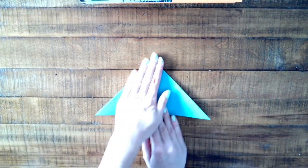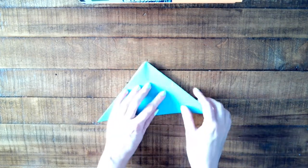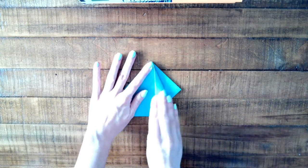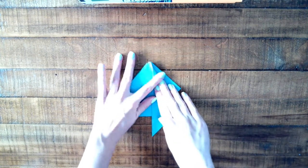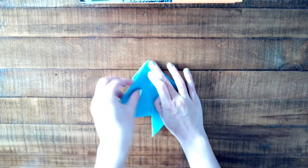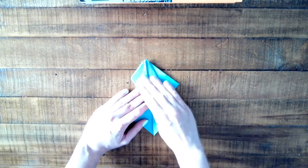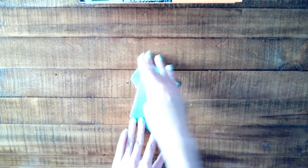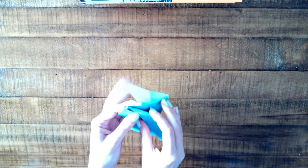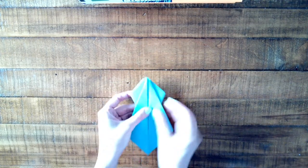Flip your triangle over and take the top edge and fold it down to the center line. Smooth that out and do the same thing on the left. So take the outer edge and fold it down towards the middle. You should have sort of a diamond shape now on the back of your kite shape.